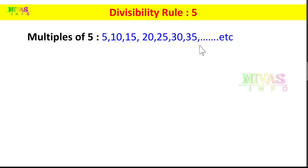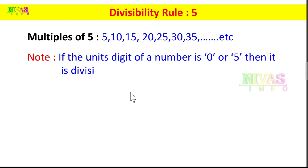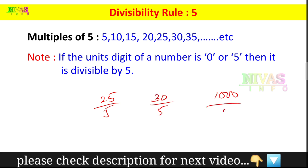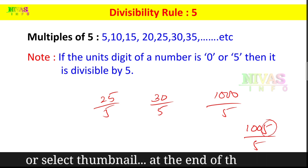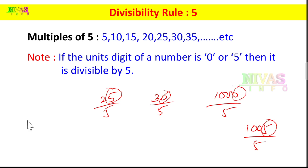For Divisibility Rule 5, the unit's digit repeats as 0, 5, 0, 5. So if the unit's digit of a number is 0 or 5, then it is divisible by 5. For example, 25 is divisible by 5, 30 is divisible by 5, 1000 is divisible by 5, and 100 is divisible by 5.